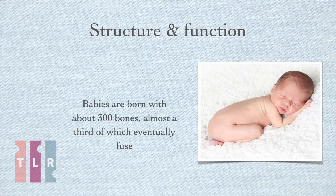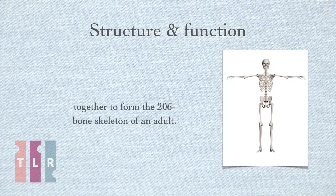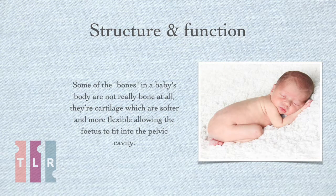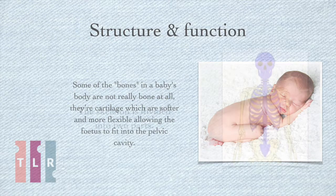Babies are born with about 300 bones, almost a third of which eventually fuse together to form the 206-bone skeleton of an adult. Some of the bones in the baby's body are not really bone at all — they are cartilage, which are softer and more flexible, allowing the foetus to fit into the pelvic cavity.